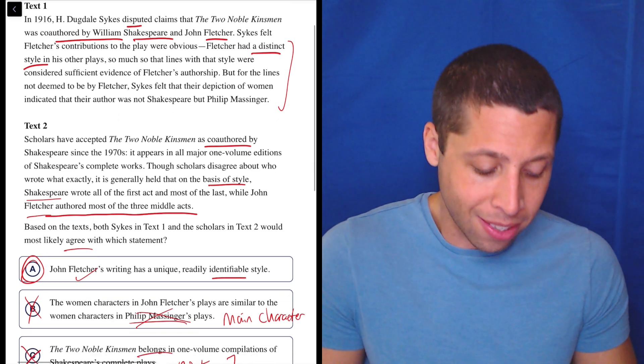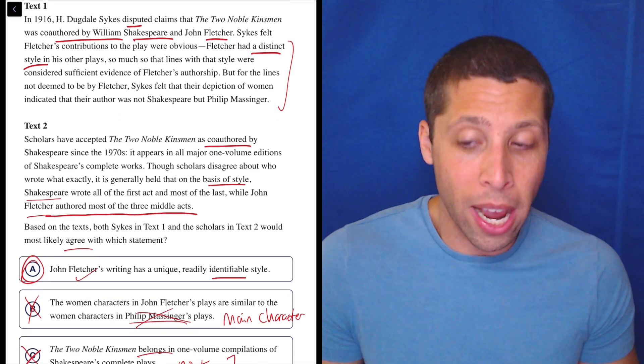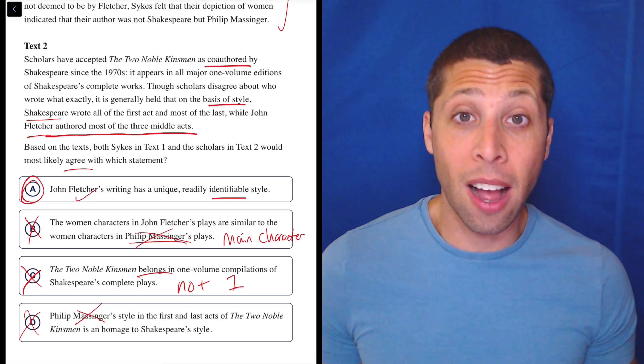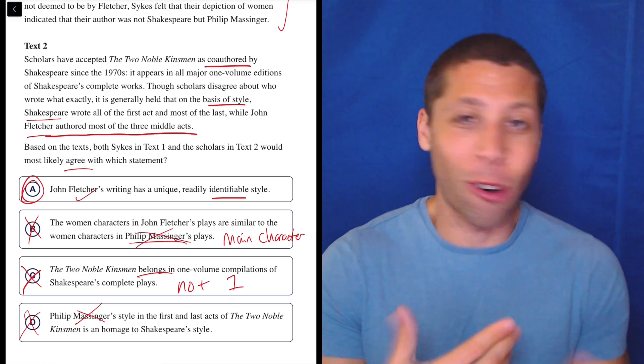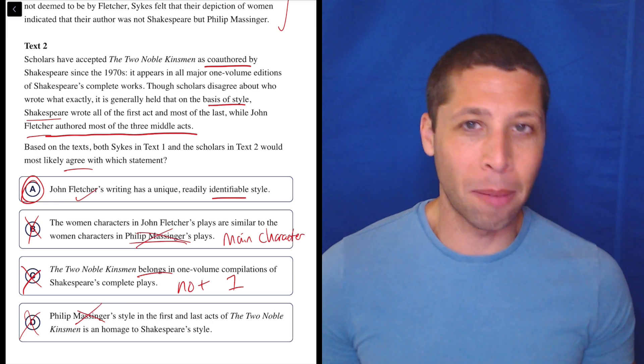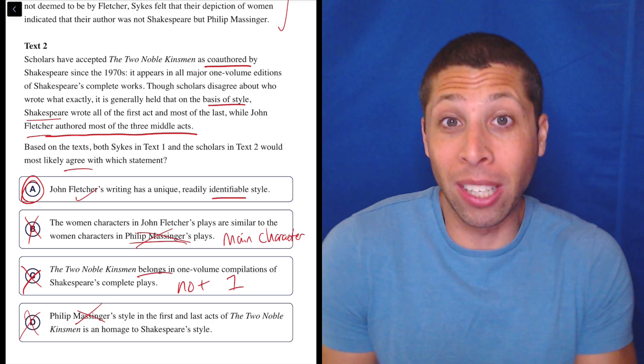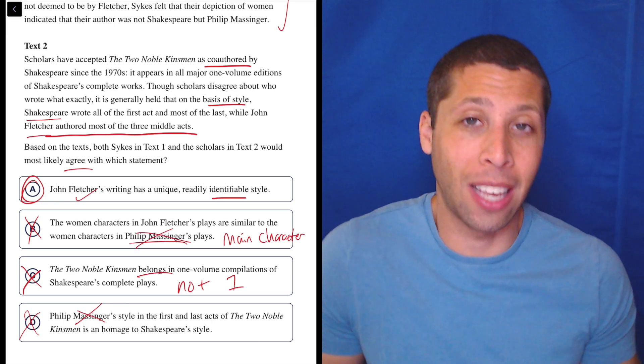But yeah, I don't know. A doesn't stand out as being obviously right, but that's why we don't spend a lot of time on these things. If we have an obviously wrong answer choice, great—cross it out and move on. Sometimes we end up just picking whatever's left over, and that's okay. I didn't really have a problem with Choice A.